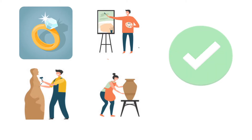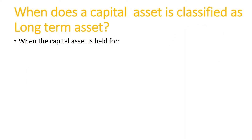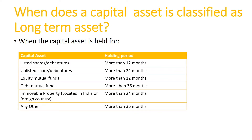Now that we know what's included in a capital asset, let's find out when a capital asset is classified as a long-term capital asset. Well, it is different for different assets and depends on the holding period. The table below shows the minimum holding period for different assets for them to qualify as long-term assets. For example, for listed equity shares and equity mutual funds, it is 12 months. For immovable property, it is 24 months.